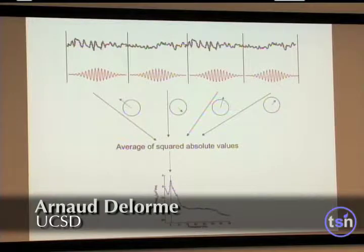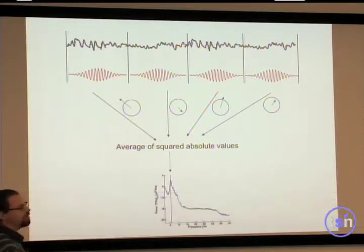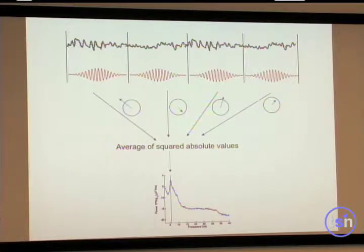But what we usually do is that we use a method which is called the Welch method. Under MATLAB, it's the P Welch function that you might have used. What this function does is that you have your continuous EEG signal right here. You're going to slice the signal into blocks, into windows.